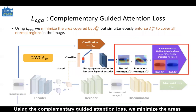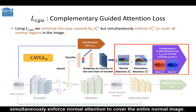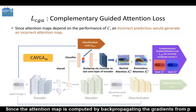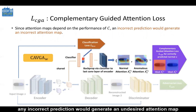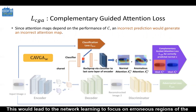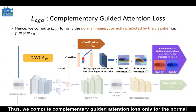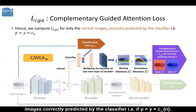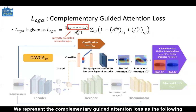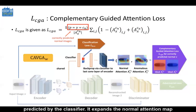Using the complementary guided attention loss, we minimize the areas covered by anomalous attention and simultaneously enforce the normal attention to cover the entire normal image. Since the attention map is computed by backpropagating the gradients from P, any incorrect prediction would generate an undesired attention map. This would lead to the network learning to focus on erroneous regions of the image during training. Thus, we compute the complementary guided attention loss only for the normal images correctly predicted by the classifier, that is if P is equal to Y is equal to CN.